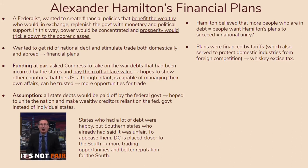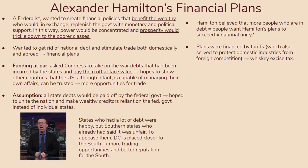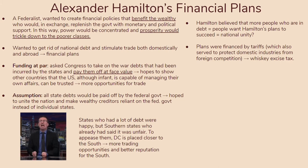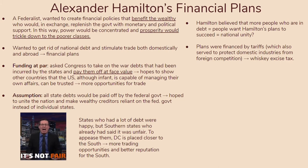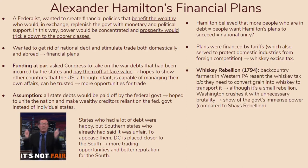Assumption was very controversial because many states, particularly the southern states, had already paid off their debt. They thought it was unfair — why would they pay off debts if the government would take them up anyway? The north wasn't doing the work but was getting away with it. To appease the south, Washington D.C. was moved closer to the south, giving them better trading opportunities and a better reputation. Hamilton also believed that the more people in debt, the more people would want his plans to succeed, fostering national unity. This led to the whiskey excise tax — a tax on transporting or selling whiskey — which really upset farmers.